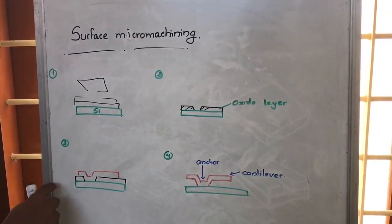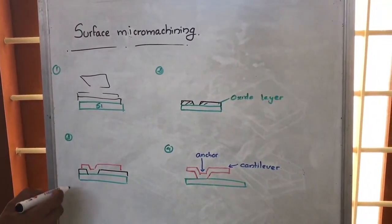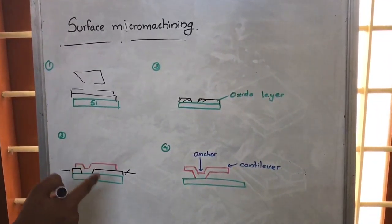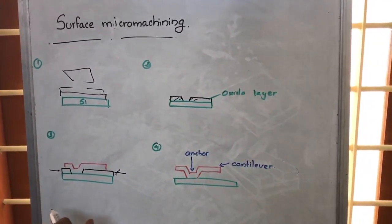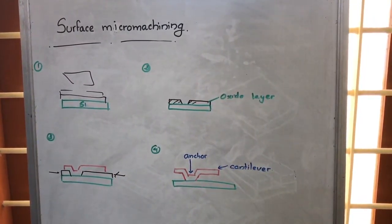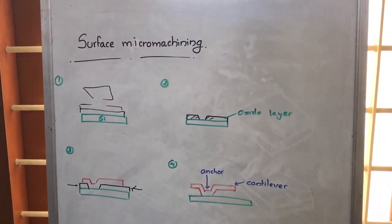Then we will be using some chemicals such that we are able to remove this sacrificial layer of oxide—the sacrificial layer that is silicon oxide. At last, we are able to make this cantilever-like structure. This is what we call as surface micromachining.